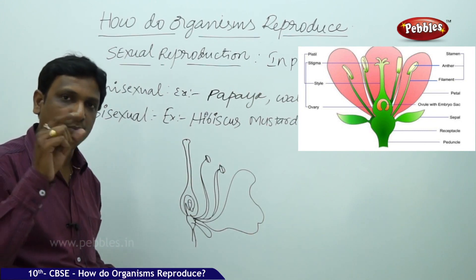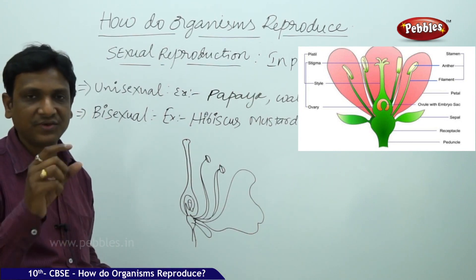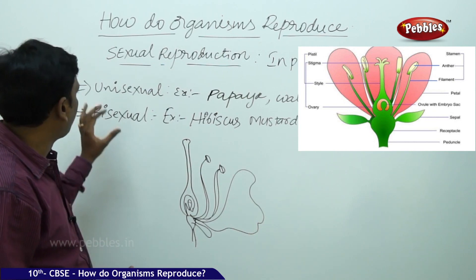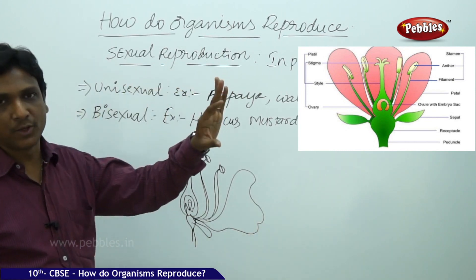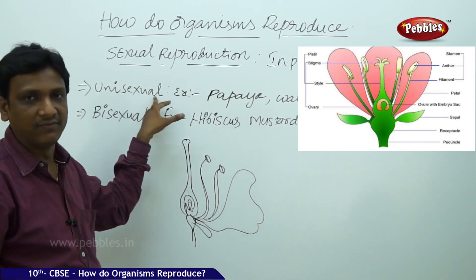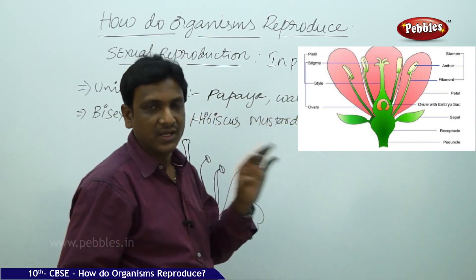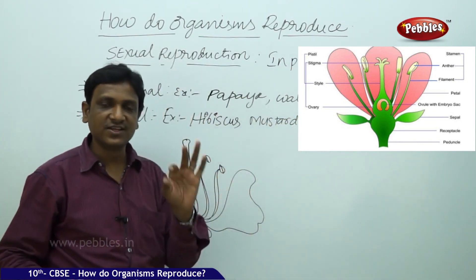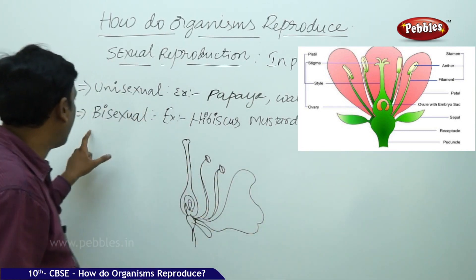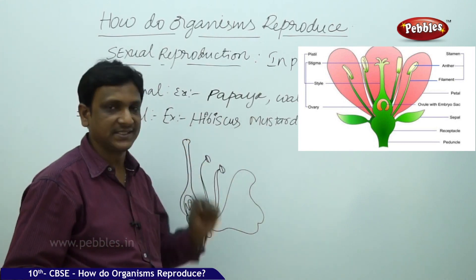Some flowers consist of both male and female parts, while some flowers consist of either male or female parts. If the flower consists of either male or female reproductive organs, you call it a unisexual flower — example: papaya, watermelon. If the flower consists of both male and female reproductive organs, you call it a bisexual flower — example: hibiscus, mustard.